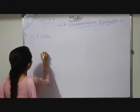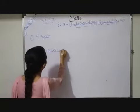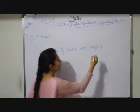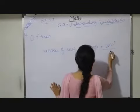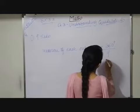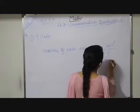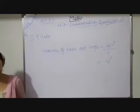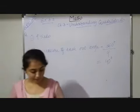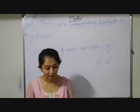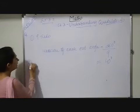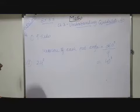The measure of each exterior angle equals total exterior angle sum, that is 360 degrees, divided by number of sides. So dividing 360 by 9, the measure of each exterior angle is 40 degrees. Next question: how many sides does a regular polygon have if the exterior angle is given as 24 degrees?